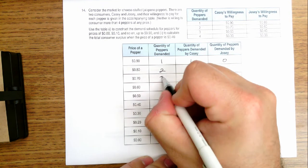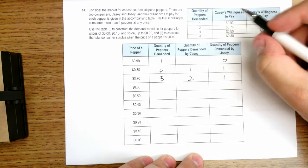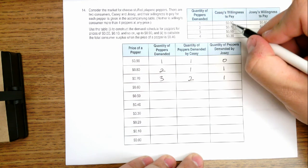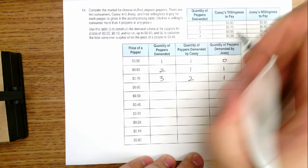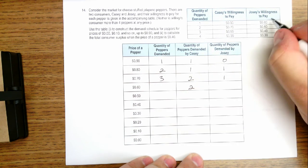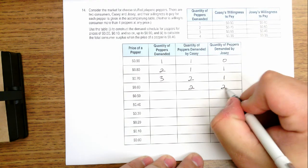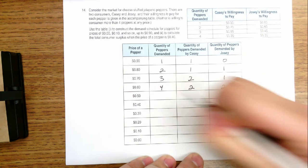So the total here would be three. At $0.60, we look and say, okay, Casey's still only willing to buy two. Josie now is willing to buy two. So four total in the market.